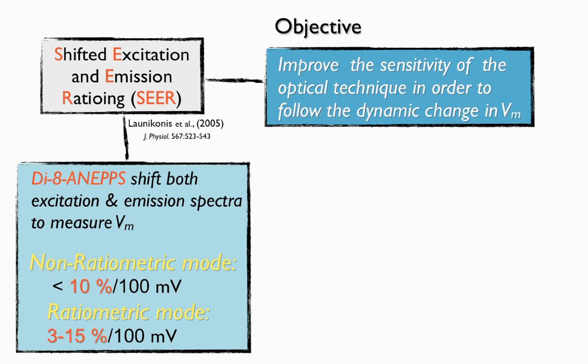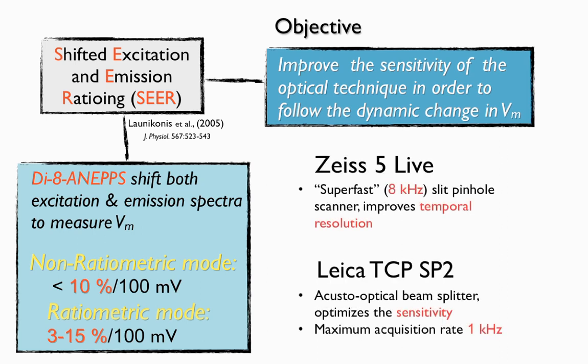In this paper, we used two different measurement systems: the Zeiss 5 Live with a superfast scanner in order to measure the di-8-ANEPPS signal with good temporal resolution, and a Leica TCS-SP2 in order to optimize the sensitivity of the fluorescent signal.